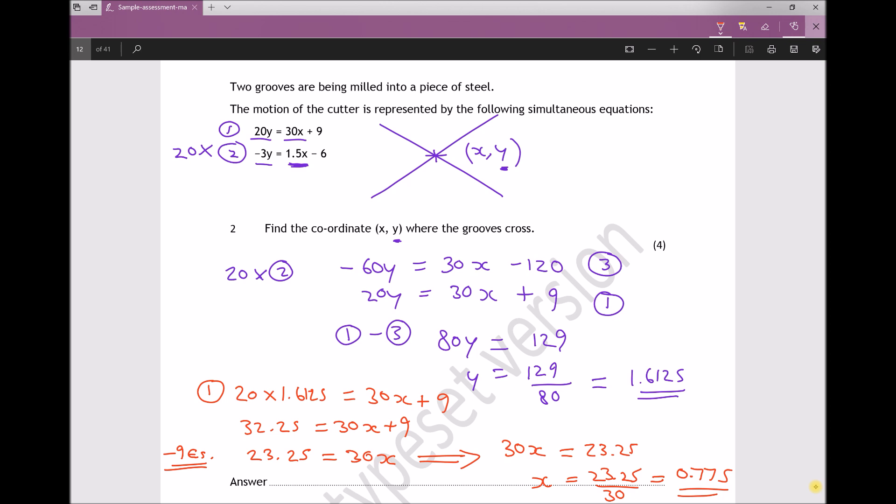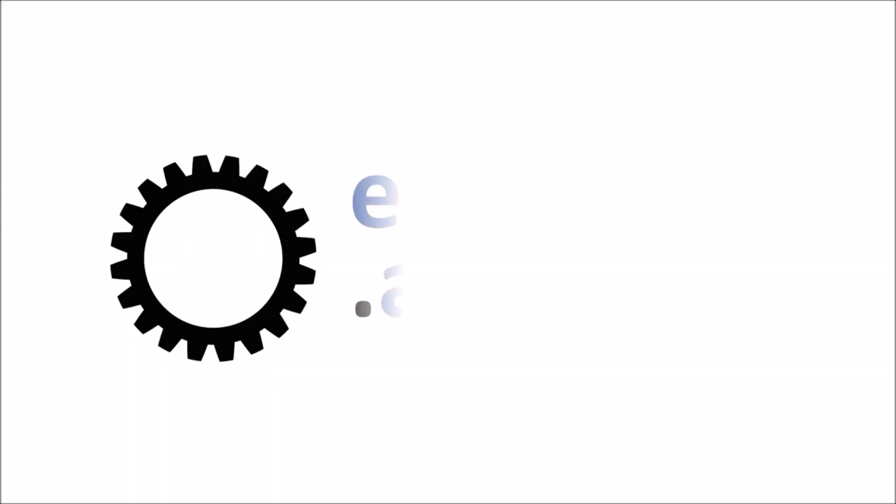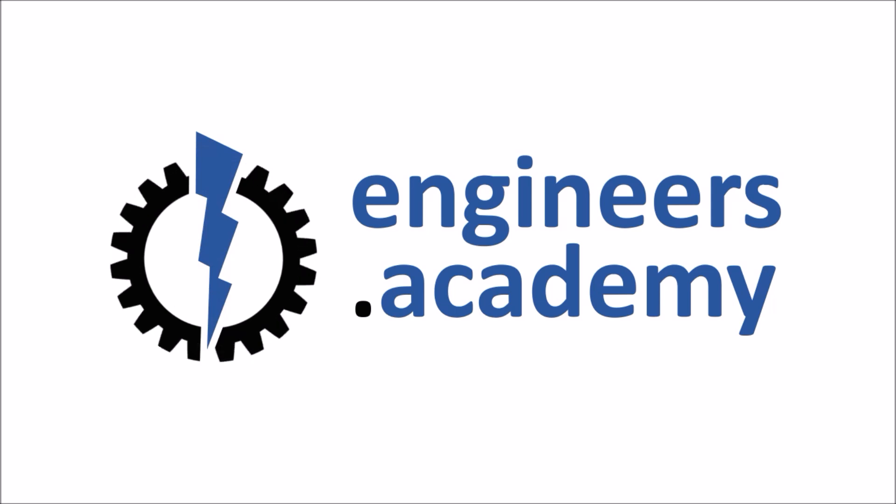So my coordinates, if I want to state this fully, is as follows: x is 0.775 when y is 1.6125. And that will make both of these equations true - equation 1 and equation 2.